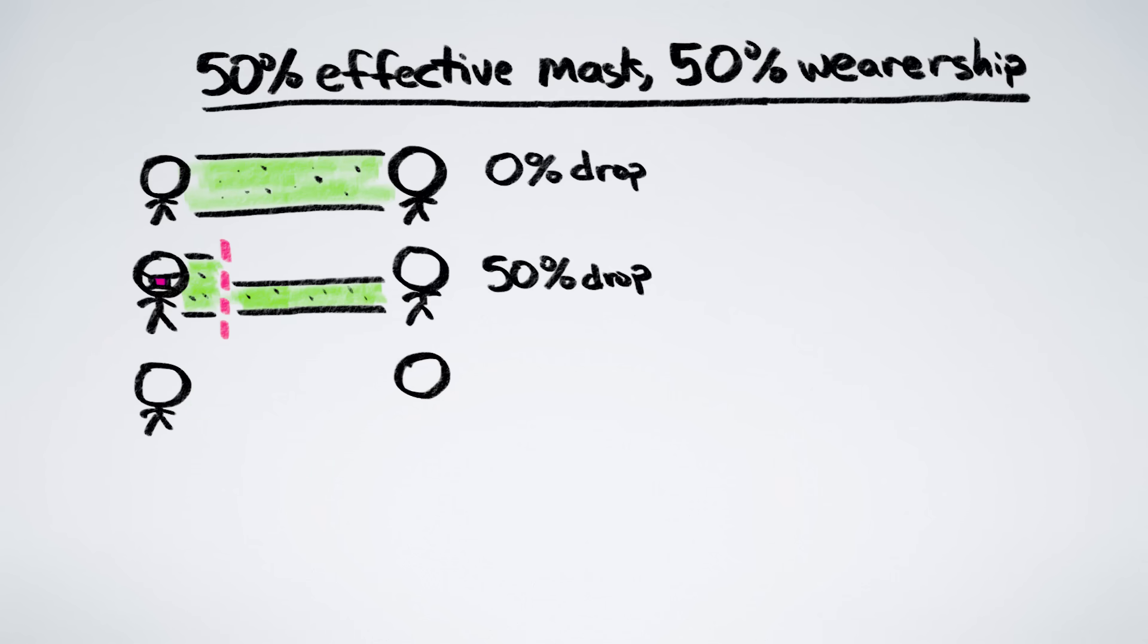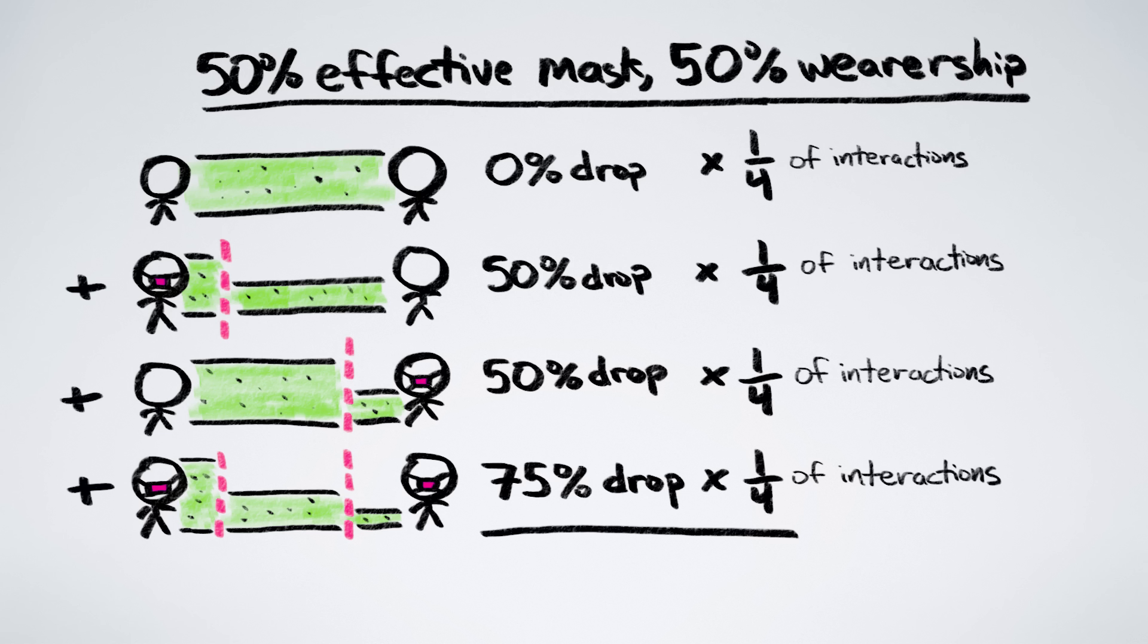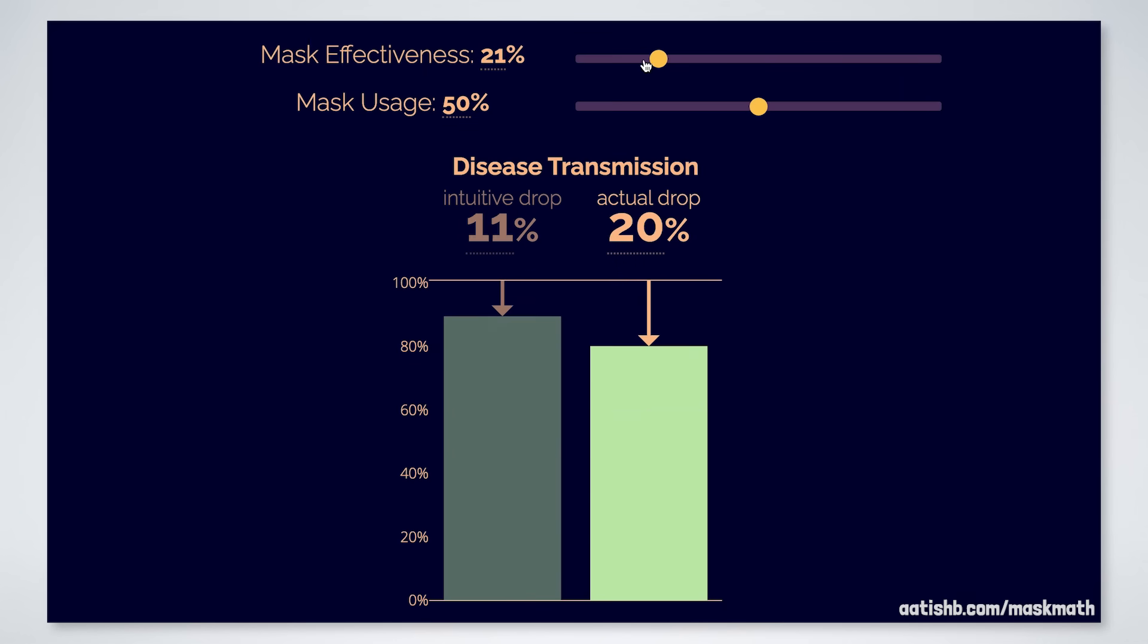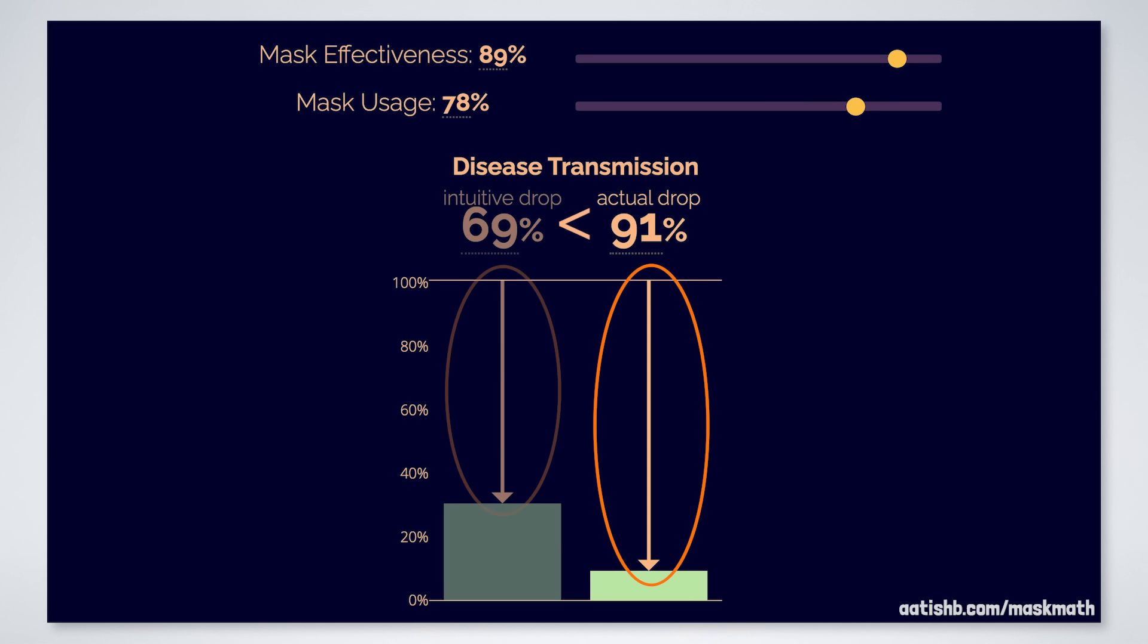But when we take into account the two-way nature of masks, and average over all four possible mask combinations for two people, the overall drop in disease transmission becomes almost twice as good. Masks work better than you'd think. And this is true in general. No matter what numbers you choose for mask effectiveness and usage, the overall drop in disease transmission is always better than the intuitive guess from just multiplying those numbers together.